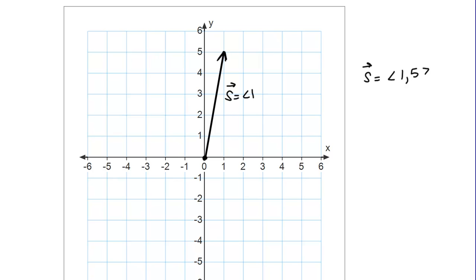Hopefully this gives you some sense of how the position vector works. What if we have a vector that's not in standard position already and we want to write the position vector for it? Let me show you an example.